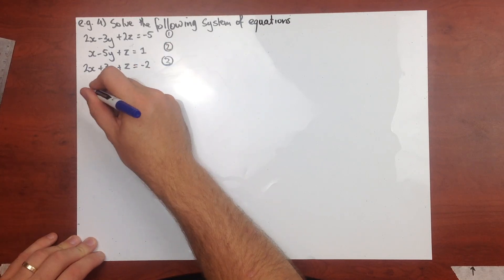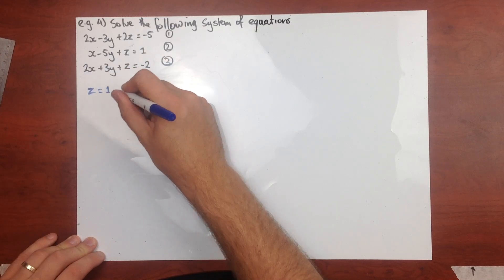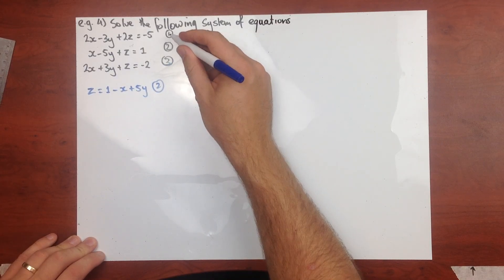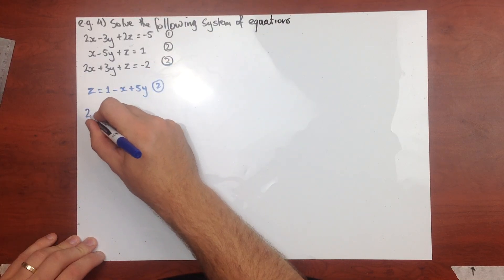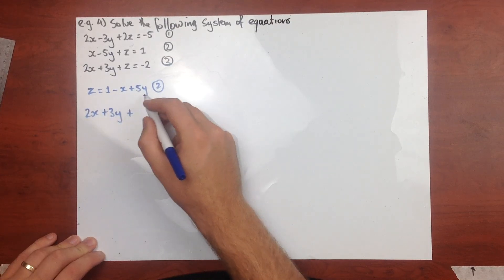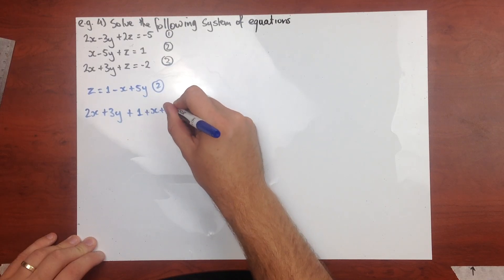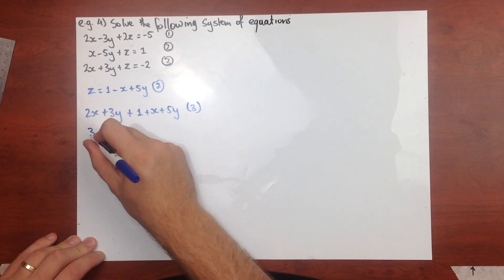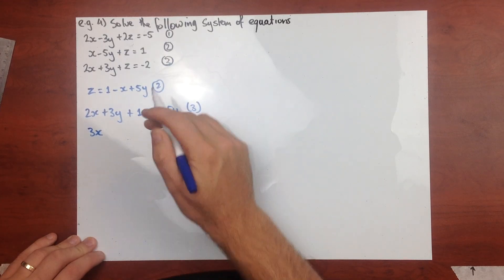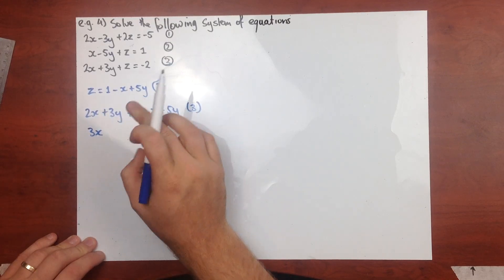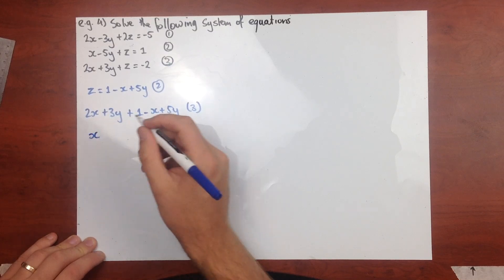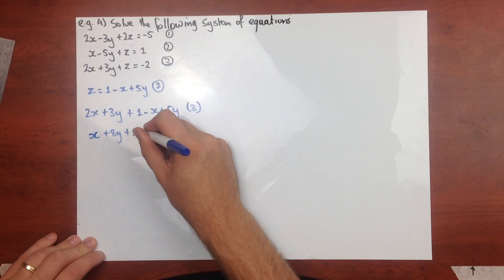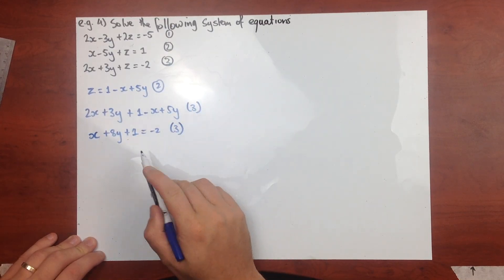Equation two rearranges to z equals 1 minus x plus 5y. Substituting that into equation three gives 2x plus 3y plus (1 minus x plus 5y) equals the right-hand side. Collecting like terms: 2x minus x gives x, and 3y plus 5y gives 8y, so equation three simplifies to x plus 8y plus 1 equals negative 2.